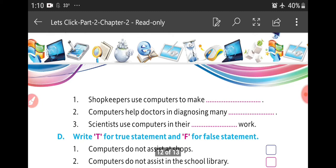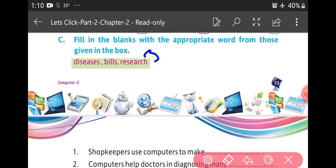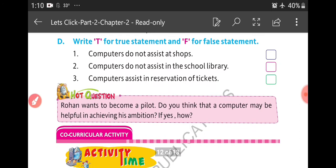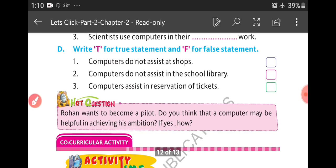Okay, now D parts. Write T for true statement and F for false statement. First one: computers do not assist at shops. Answer is false. Computers do not assist in school library. Answer is false.